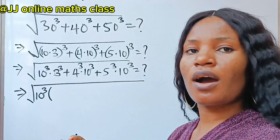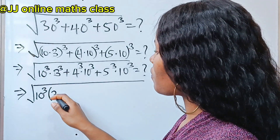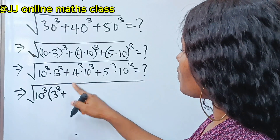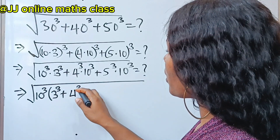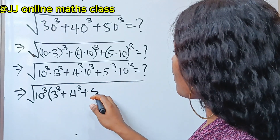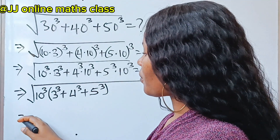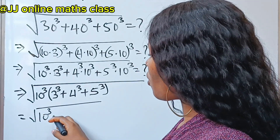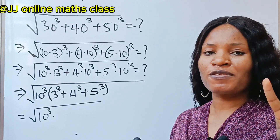We open our bracket: when this is divided by 10 to the power of 3 we have 3 to the power of 3, plus 4 to the power of 3, plus 5 to the power of 3. Now this is equal to the square root of 10 to the power of 3 multiplied by — recall that this is the first method.